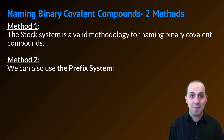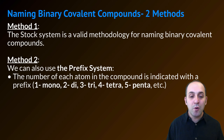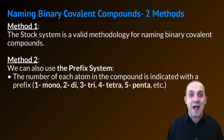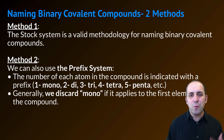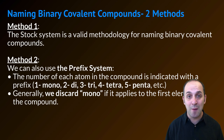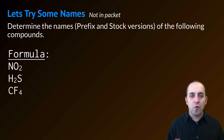Another way — and this only works for covalent compounds — is to use the prefix system. In the prefix system, the number of each atom in the compound is indicated with a prefix: one is mono, two is di, three is tri, four is tetra, five is penta, six is hexa. You'll probably never see more than four or five atoms. The thing that's a bit unusual about the prefix system is that we generally do not use the mono prefix for the first element in the compound, though it is technically an acceptable name — you just won't commonly see it.